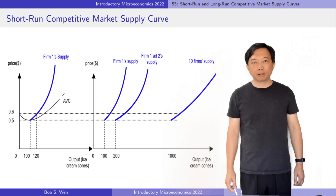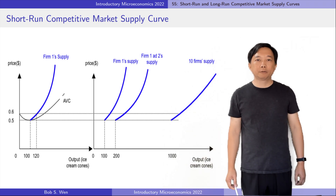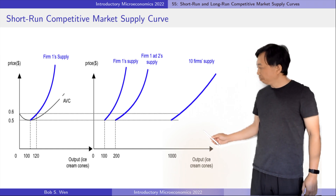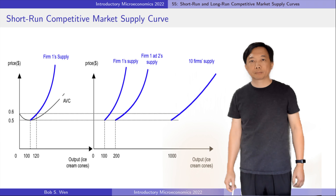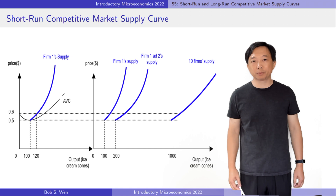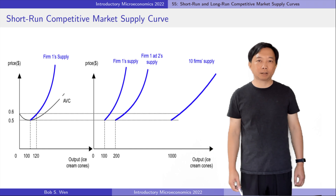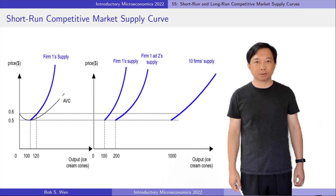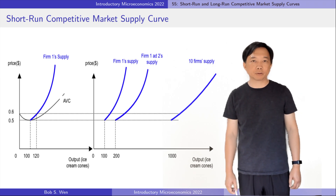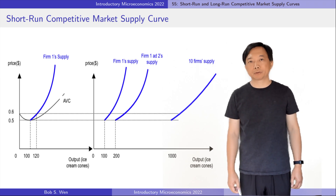The market supply curve flattens as the number of firms in the market increases. Suppose there were 1,000 ice cream firms in the market — the market supply curve would be much flatter than this one. The market supply at a given price is the horizontal sum of each individual firm's supply at that price. So the more identical firms producing at a given price, the flatter the short run supply curve at that price. The market supply approaches a horizontal line at $0.50 as the number of ice cream firms approaches infinity.